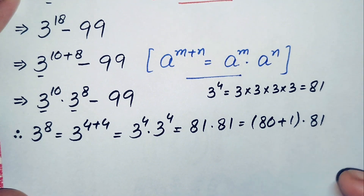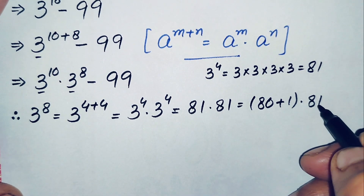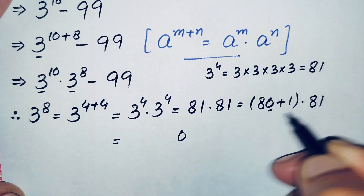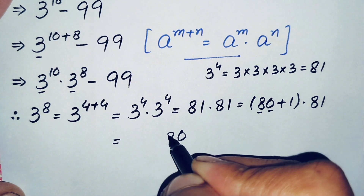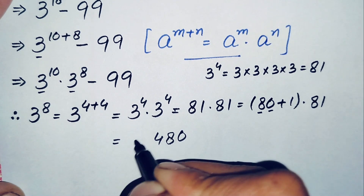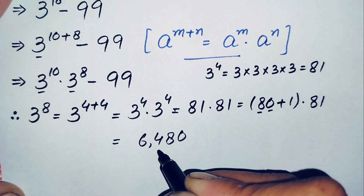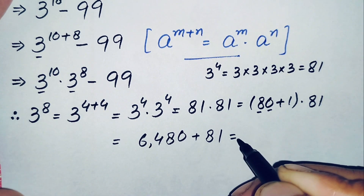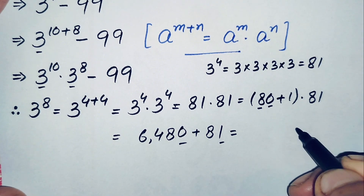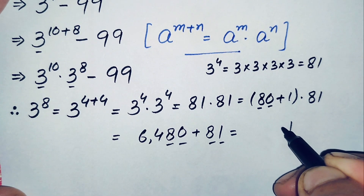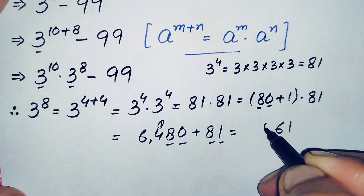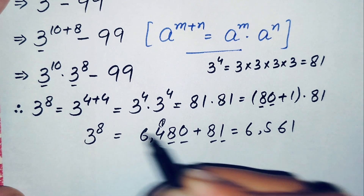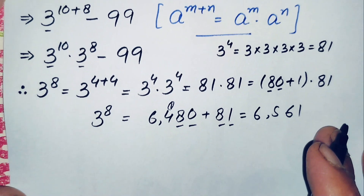So 3 to the power 8 equals 81 times 81. We can write 81 as 80 plus 1, times 81. Multiplying: 81 times 80 equals 6480, and 81 times 1 equals 81. Adding these: 6480 plus 81 equals 6561. So the value of 3 to the power 8 is 6561.